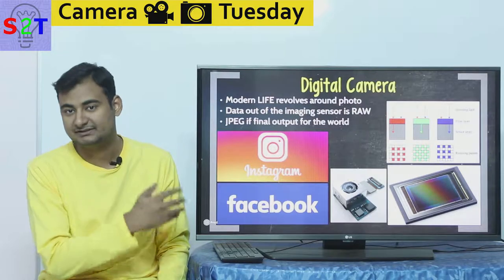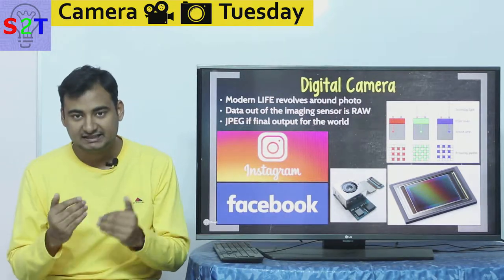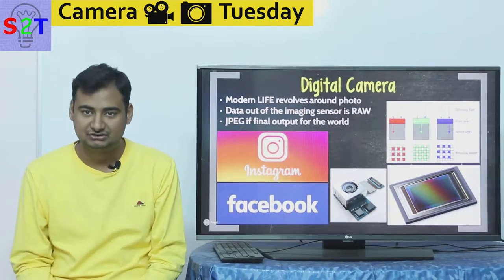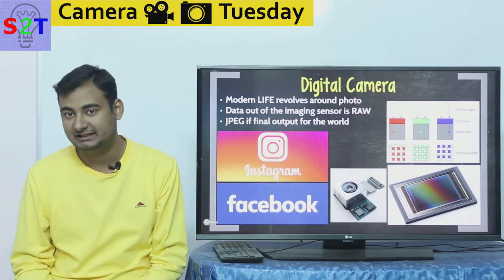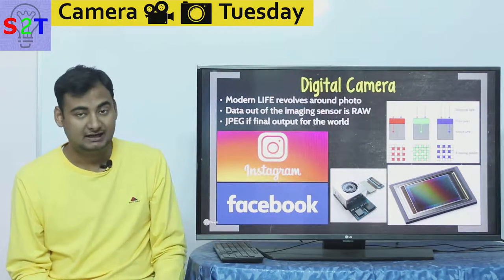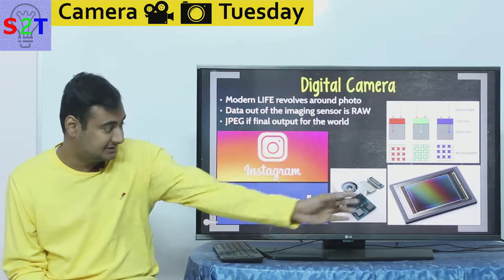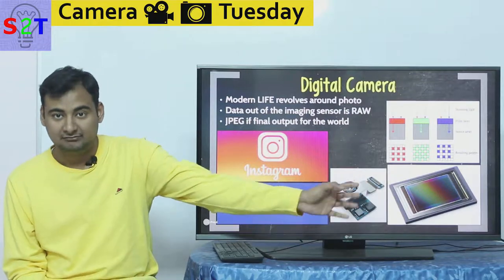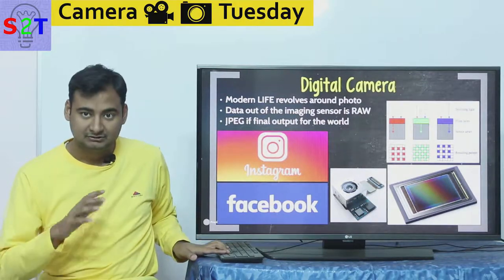JPEG is basically the final image — what goes to your Facebook, WhatsApp, Instagram. That's the end-user product, basically what you're going to use at the end of the day. RAW, on the other hand, is coming directly from the imaging sensor, as clean an output as possible from the sensor — it's not processed yet.